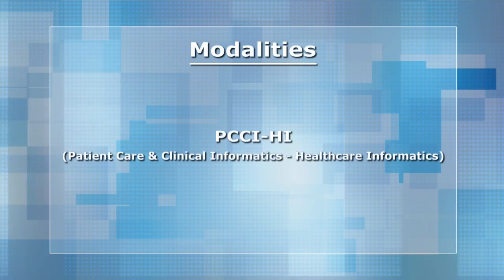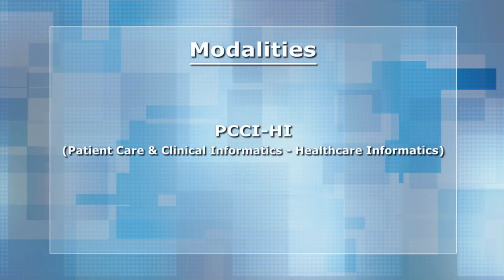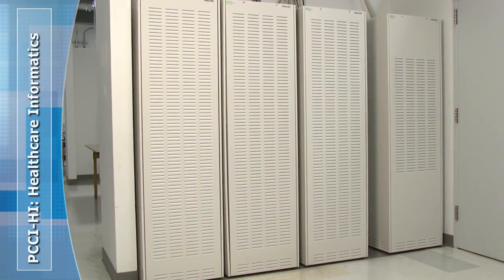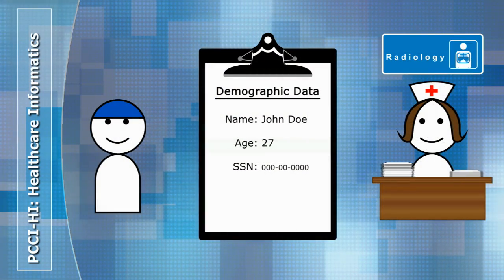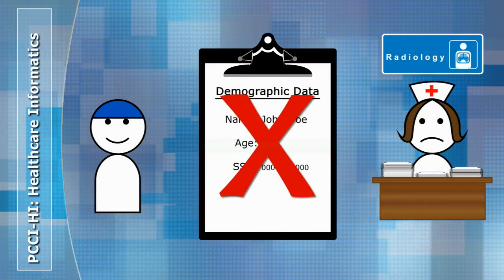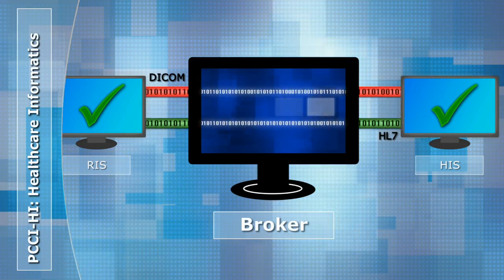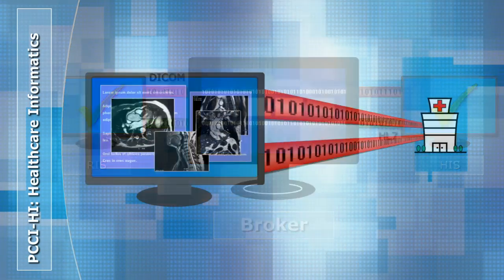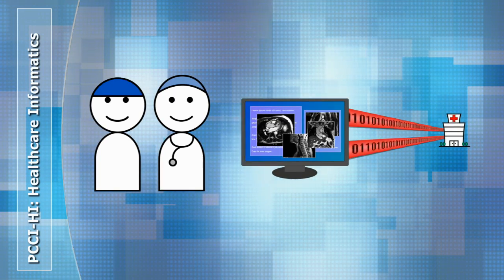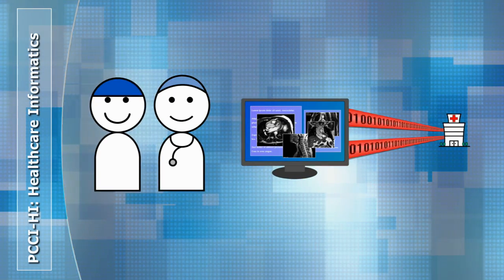Lastly, there's healthcare informatics, which covers the processing and storage of data. Whereas hospitals used to have rooms full of paper records and teams of data entry specialists, HI has streamlined the entire process, making a trip to the hospital safer and more pleasant for the patient, as well as reducing overhead and mistakes by the hospital. So there you have it — eight unique modalities, each with its own purpose, and all contributing to Philips' position as a leader in the healthcare industry. Enjoy the show.